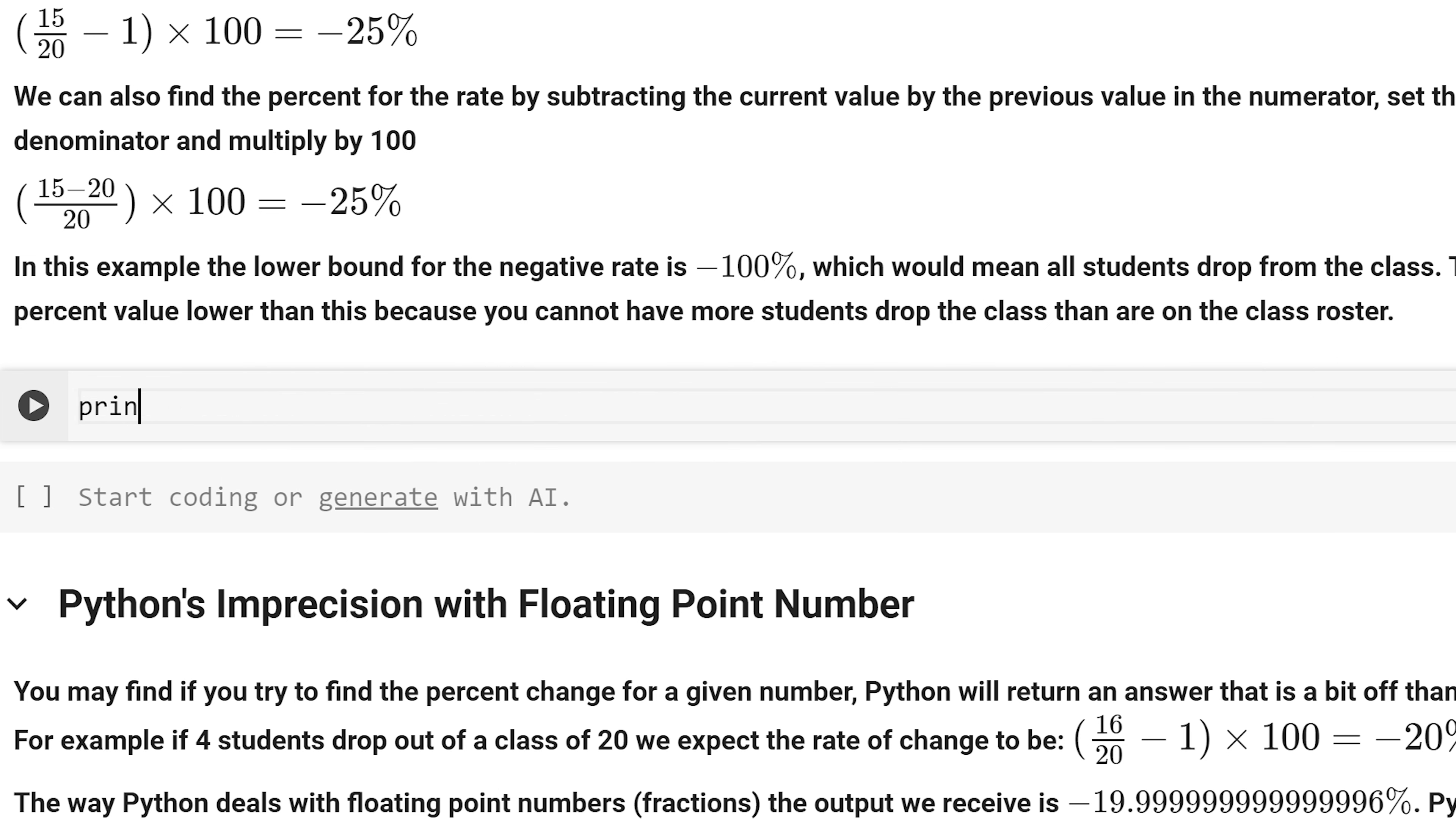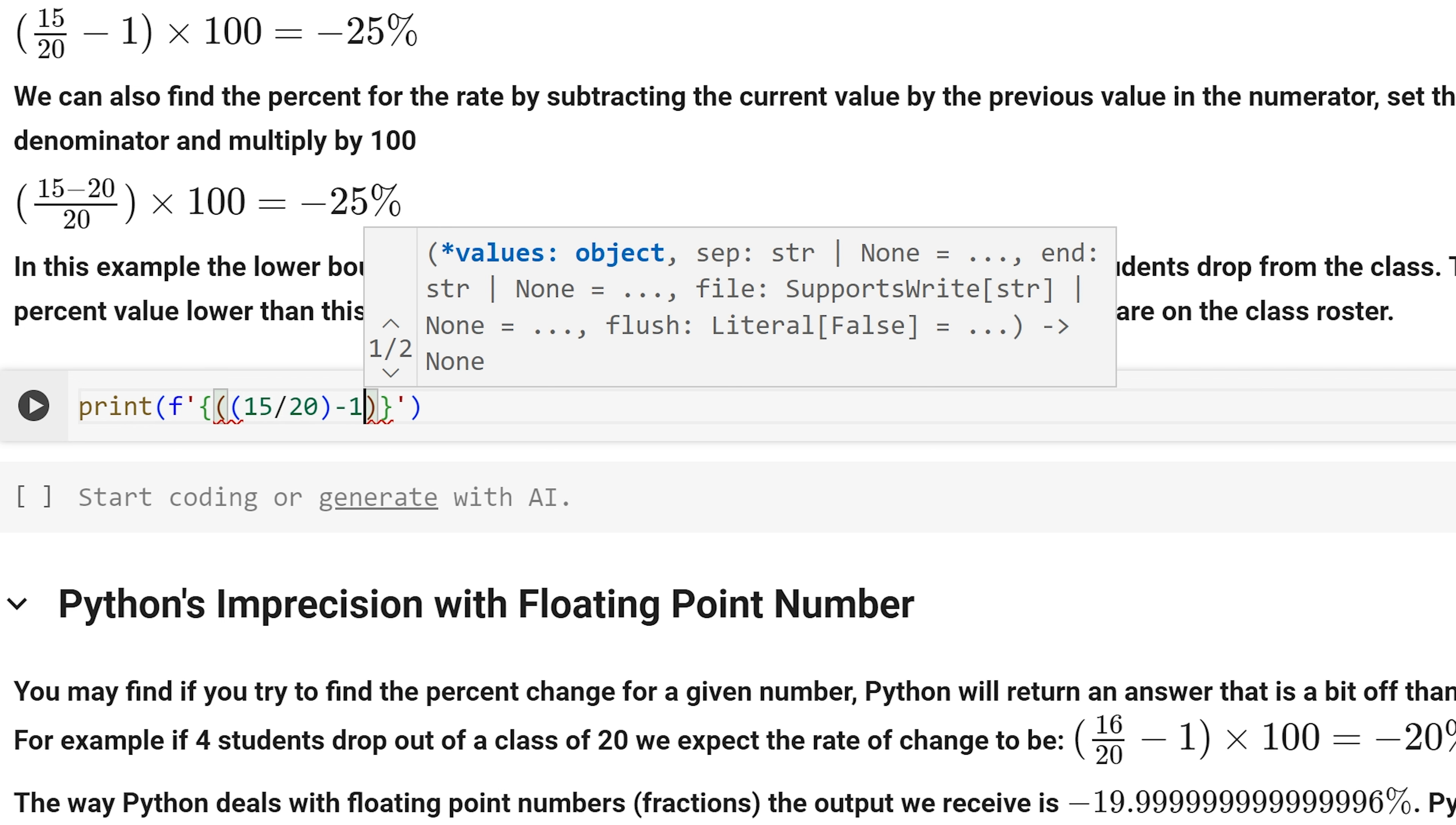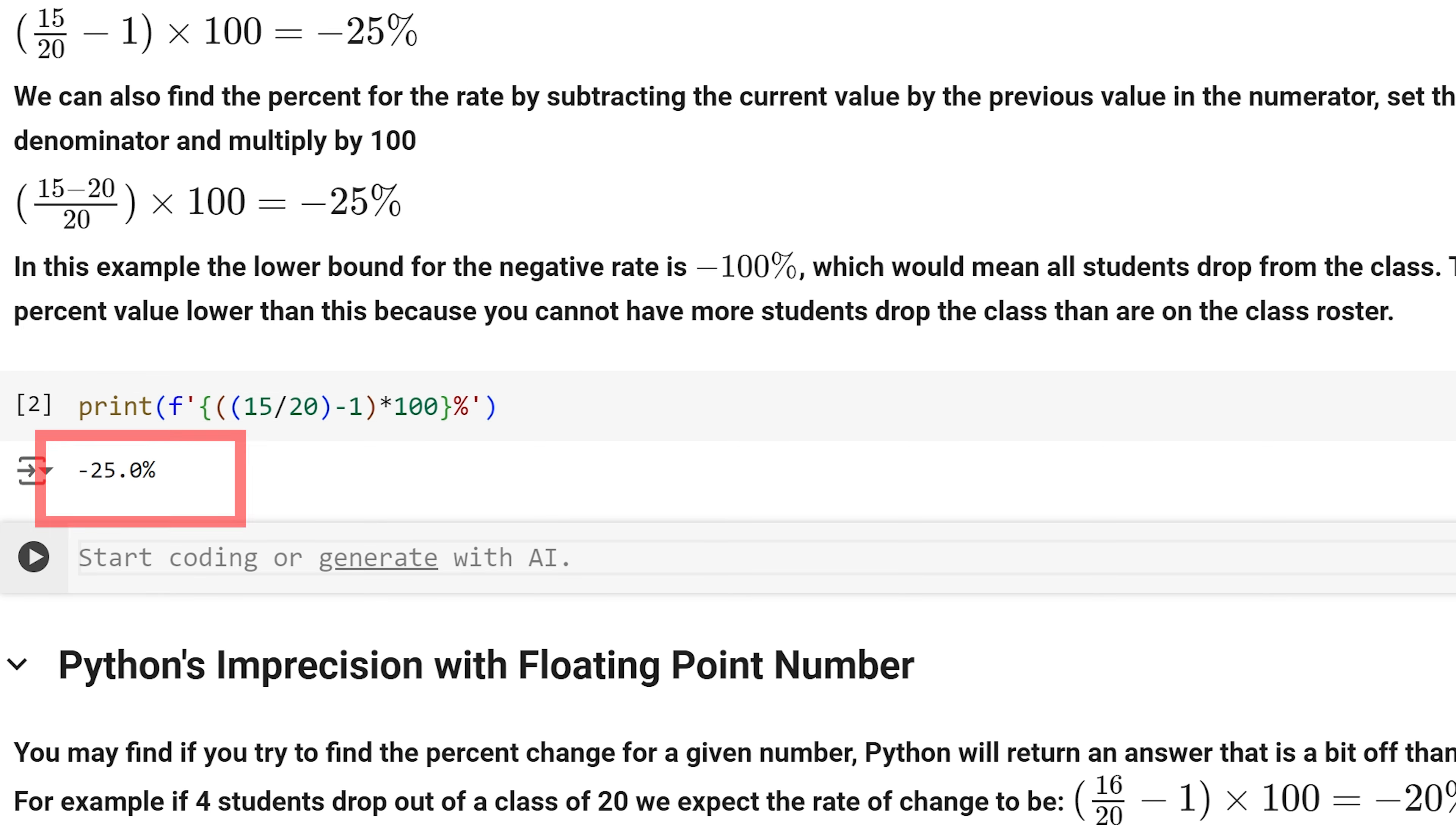Within Python, I am going to call the print function, then I am going to call the f string, then within the curly braces, I am going to input 15 divided by 20 in parentheses, subtract that by 1 in parentheses, then multiply by 100. And like before, I am going to put a percent on the outside. For the output, we have the expected rate of negative 25 percent.